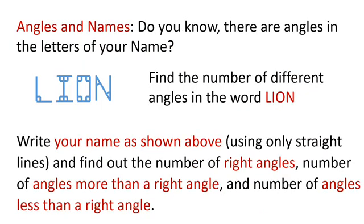Do you know there are angles in the letters of your name? See the word lion. I have marked the angles in these four letters. Find the number of different angles in the word lion. Now, write your name as shown above, that is using only straight lines, and try to find out the number of right angles, the number of angles more than a right angle, and number of angles less than a right angle in your name.